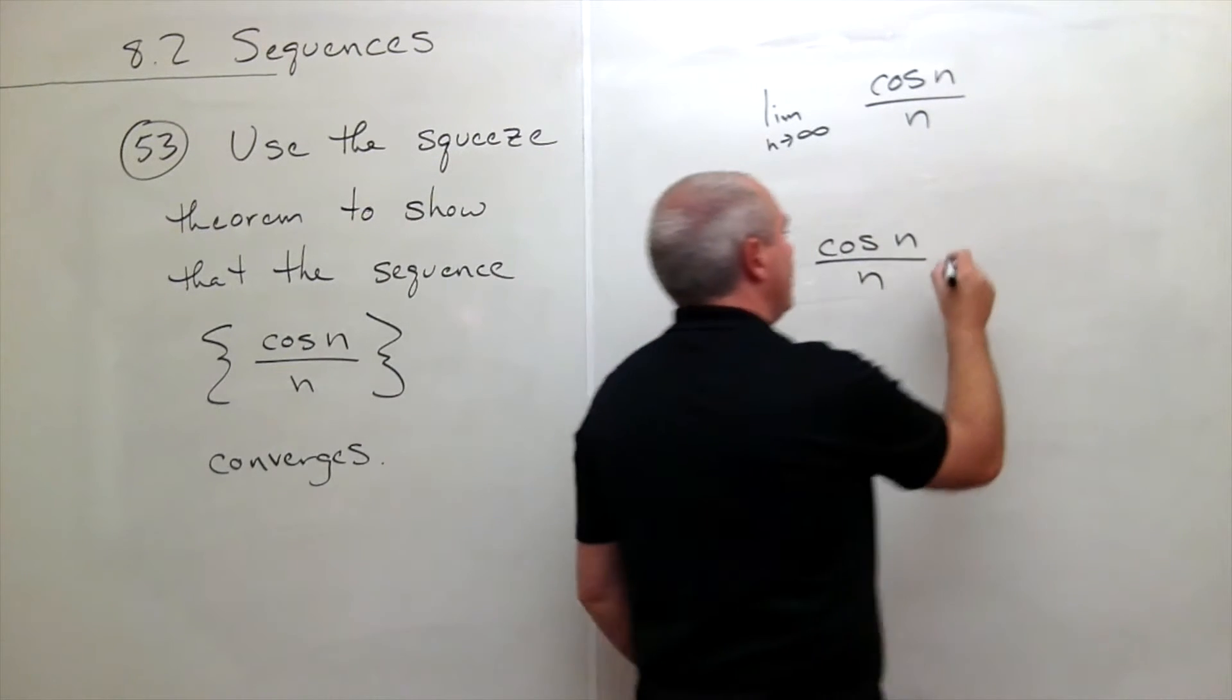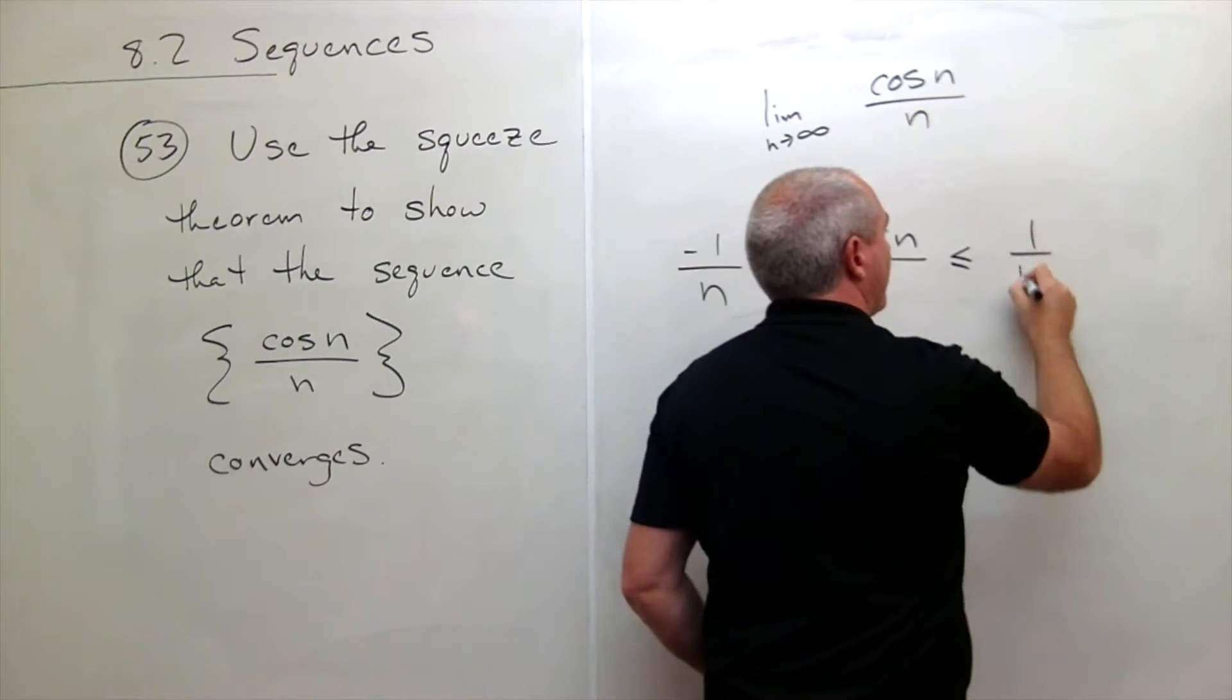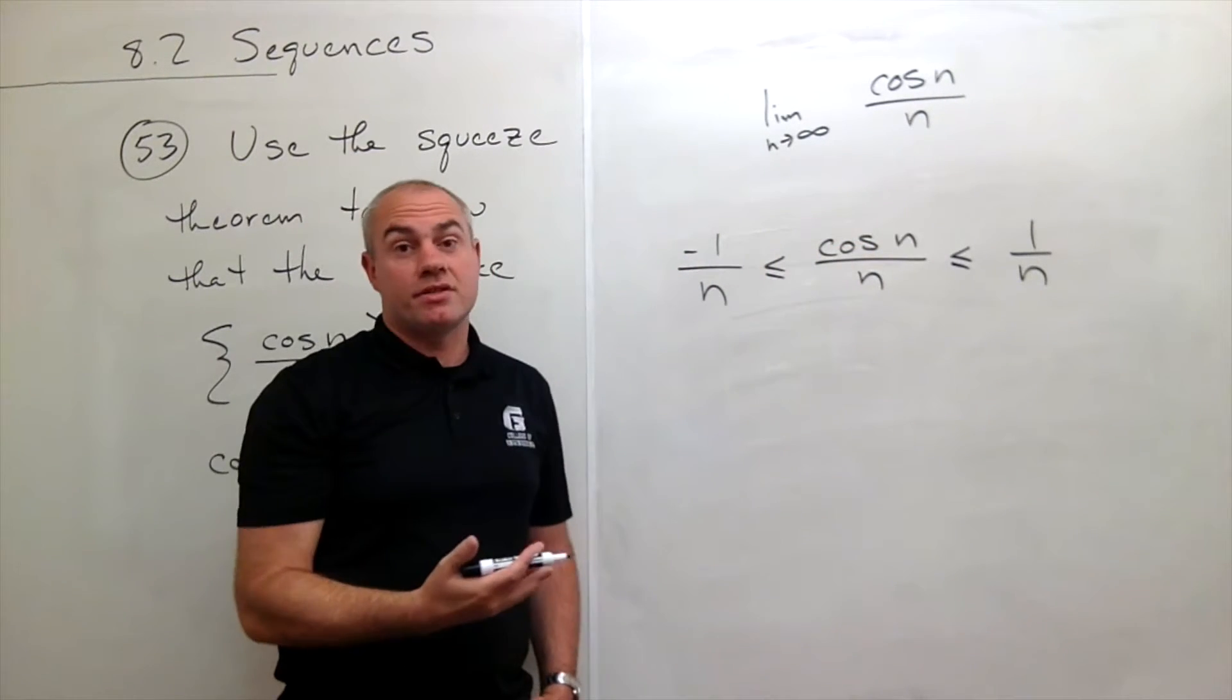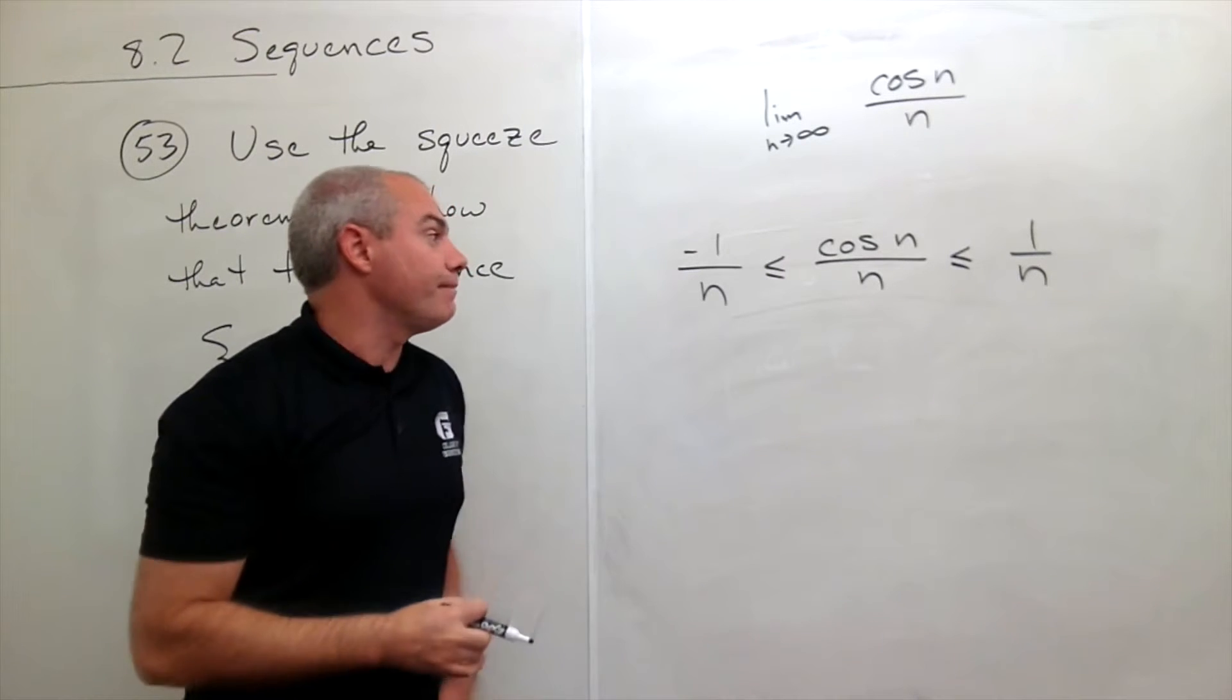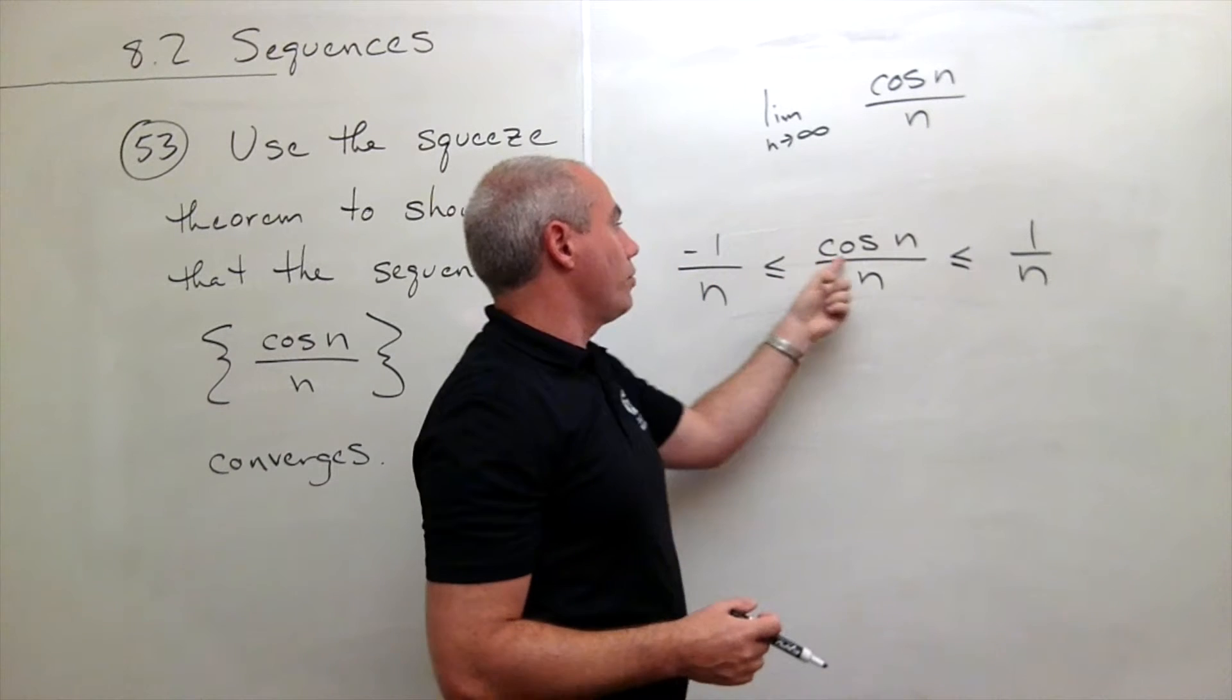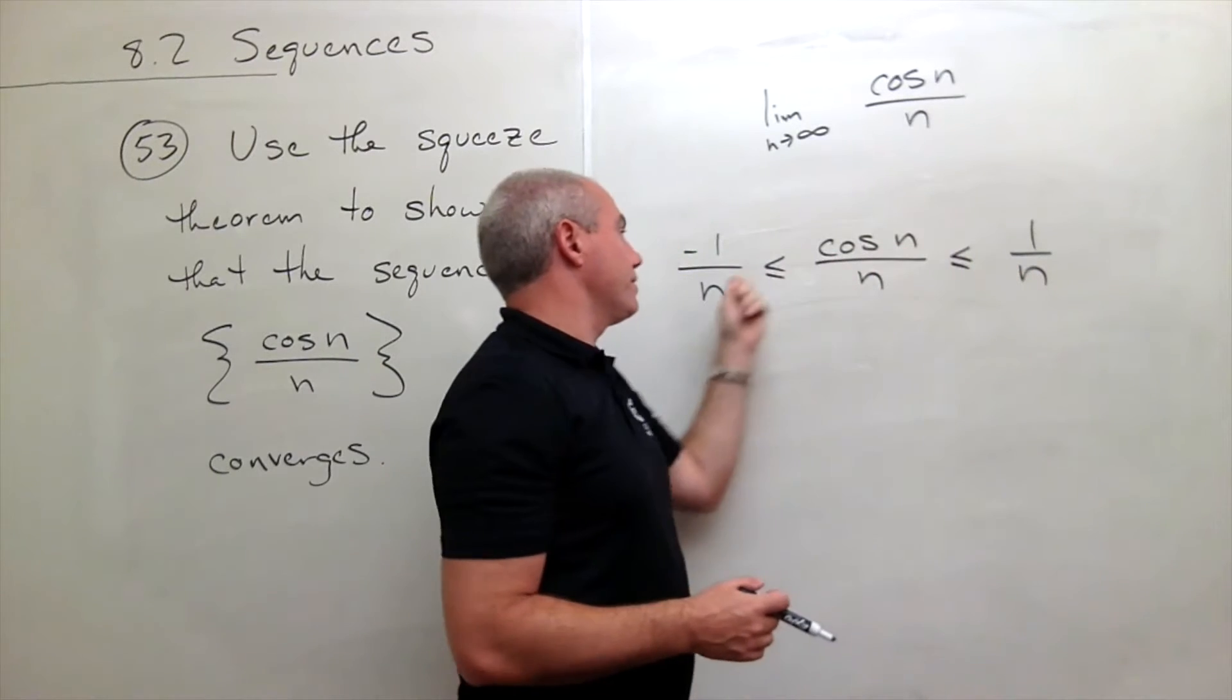Similarly, this guy is always going to be smaller than 1 over n. Because cosine of n, at the most, could be 1. It's probably smaller. So we've bound cosine n over n as a sequence between these two other sequences.